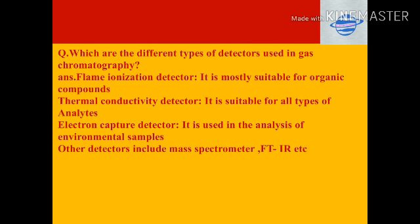Electron capture detector: used in the analysis of environmental samples and is an example of a selective detector. It consists of a beta emitter such as nickel-63. The emitted electrons ionize the mobile phase — usually nitrogen — producing additional electrons that create an electric current between two electrodes. It is highly selective towards solutes with electronegative functional groups such as halogens and nitro groups, and is relatively insensitive to amines, alcohols, and hydrocarbons.